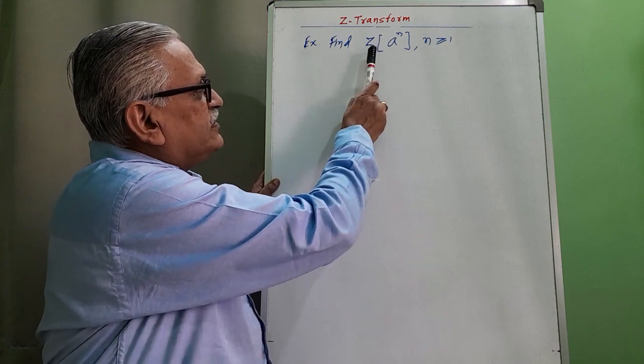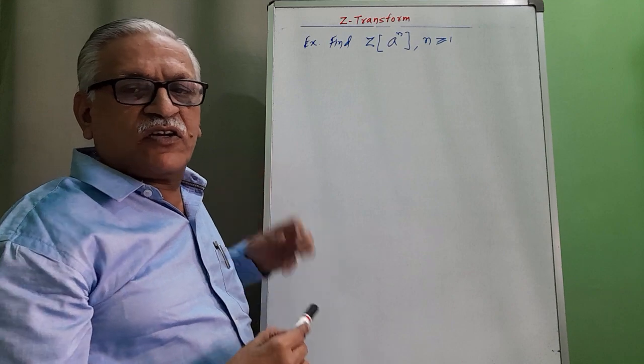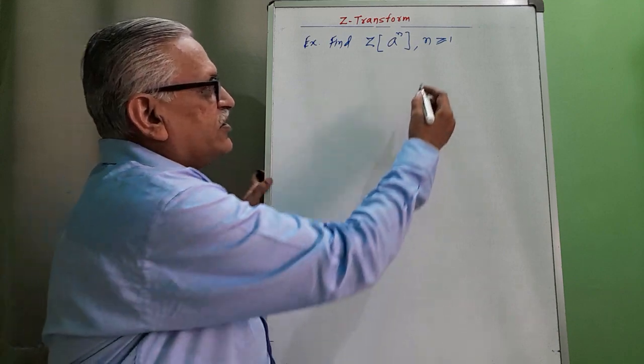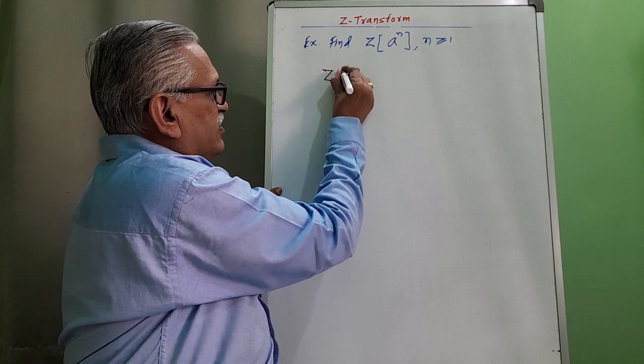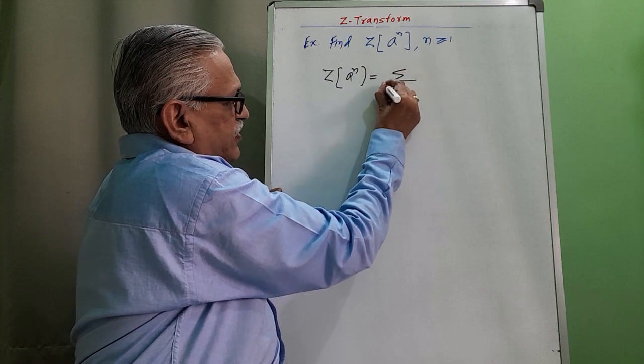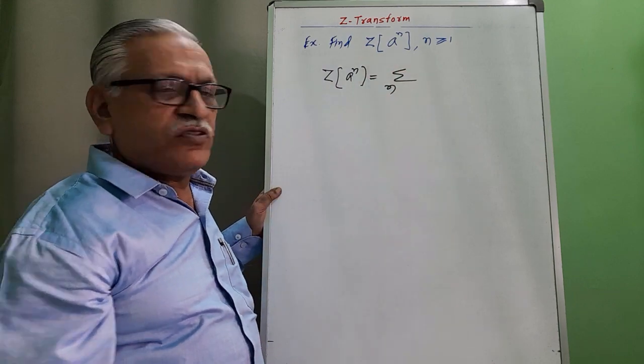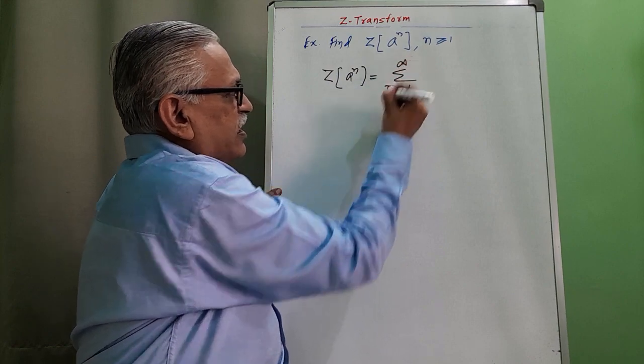Let us find Z-transform of A raised to N with the condition N greater than or equals to 1. And as the condition is N greater than or equals to 1, Z-transform of that function A raised to N is obtained by summation. Instead of starting from 0, we start it from 1 to infinity.